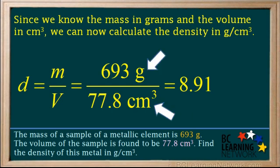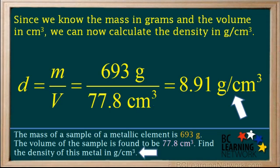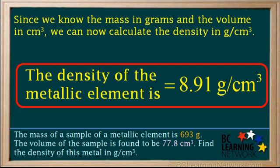Mass is in grams and volume is in centimeters cubed, so the unit for density will be grams per centimeter cubed, and this is the same unit that was asked for in the question. So the final answer is the density of the metallic element is 8.91 grams per centimeter cubed. This is the density of the metal nickel.